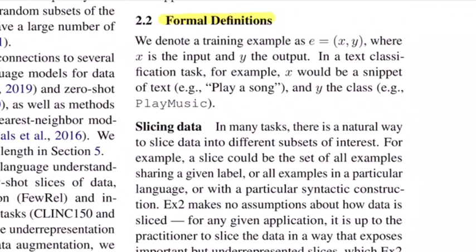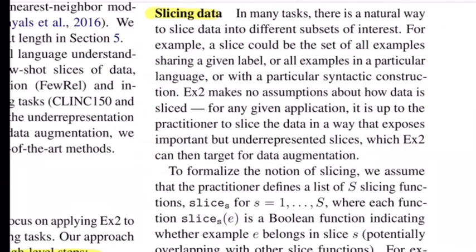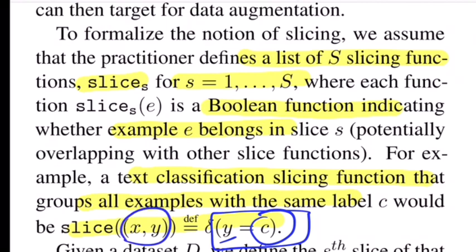If we talk about formal definitions, they denote the example e as (x, y), where x is the input and y is the output. For a text classification problem, 'play a song' would be x and if we want to know the intent, which is the y value, that would be 'play music'. Talking about how to slice the data, the algorithm (example extrapolation EX2) doesn't make any assumption about how data is sliced. It could be about sharing the same label, some syntactic structure, or a particular language. If we assume there's a list of s slicing functions denoted by slice_s, where s ranges from 1 to S, each is a Boolean function indicating whether a given example e belongs to that slice or not. For text classification, the slicing function that groups all examples with the same label c would be this. This is how you basically define it formally.